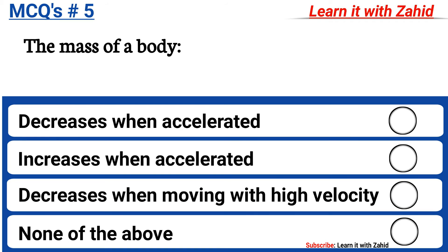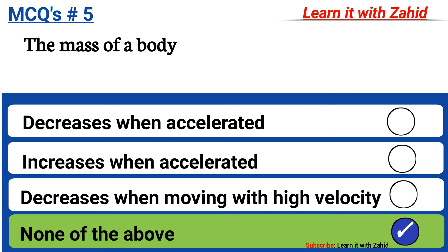The mass of a body: option A decreases when accelerated, option B increases when accelerated, option C decreases when moving with high velocity, option D none of the above. The correct answer is option D, none of the above.